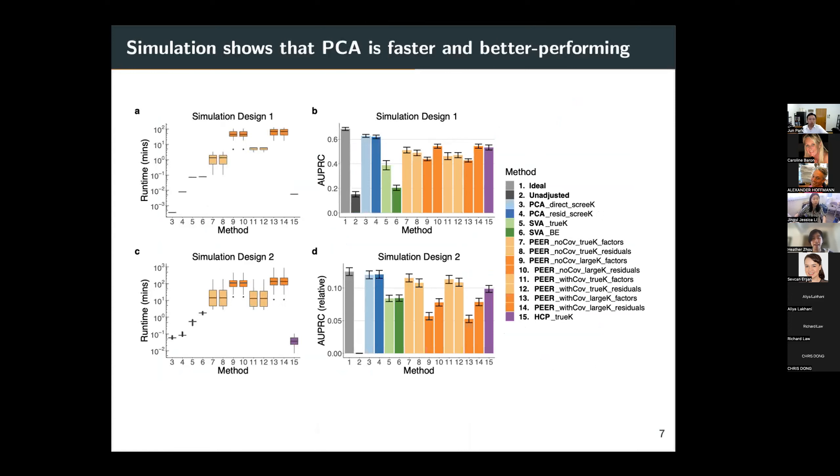So this plot summarizes our comparison of the different variants of the different methods under those two simulation settings. We find that on the left hand side, which shows the runtime comparison, the PEER methods are the slowest. So the yellow/orange box plots are higher than the other box plots. The first two positions are PCA methods and they're some of the fastest.